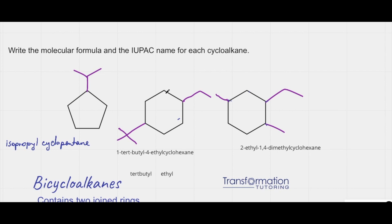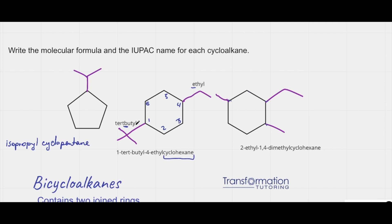Now let's look at the second molecule. My second molecule has two substituents — this one is called tert-butyl and this one is called ethyl. When we have two substituents, we check the alphabetical order. 'Tert' does not count in alphabetical order, so only 'butyl' counts — B versus E. B goes first, so I give tert-butyl number one. Counting around the ring: one, two, three, four, five, six — this is a six-carbon ring, so it's cyclohexane. The name is 1-tert-butyl-4-ethyl cyclohexane.